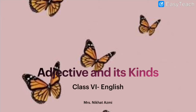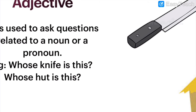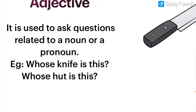I hope you have understood the concept of adjective of quality, quantity, and number. Now we have come to interrogative adjective. When you see the word interrogative, they are almost the same kind as pronouns. Now with interrogative adjective, you have to remember that a question has to come with a noun. Just remember that you have to ask questions and it has to be related to a noun.